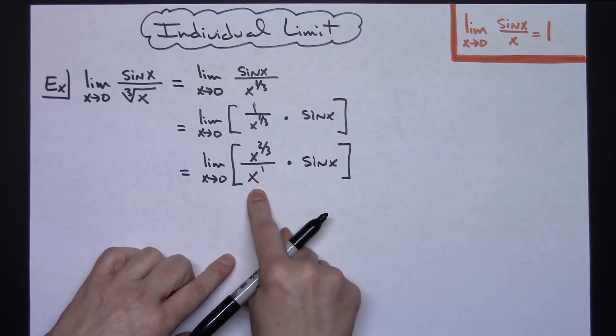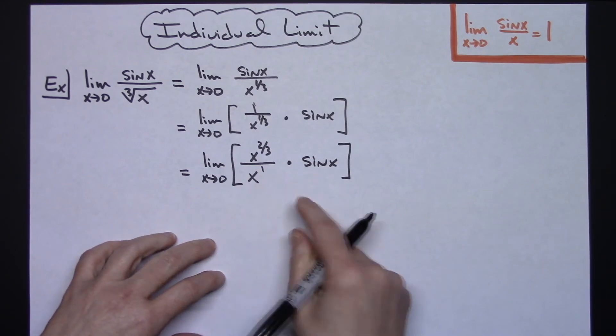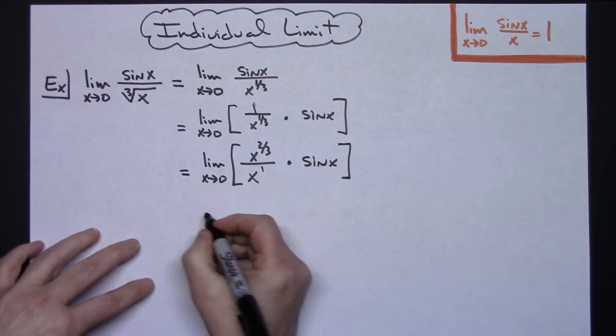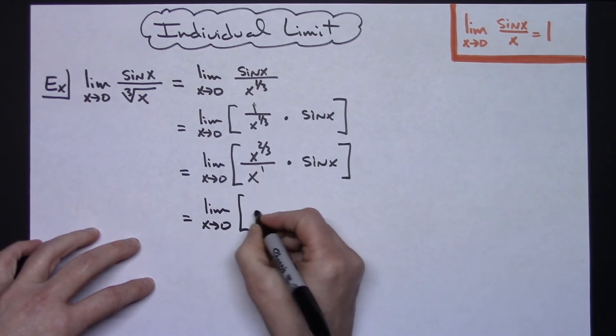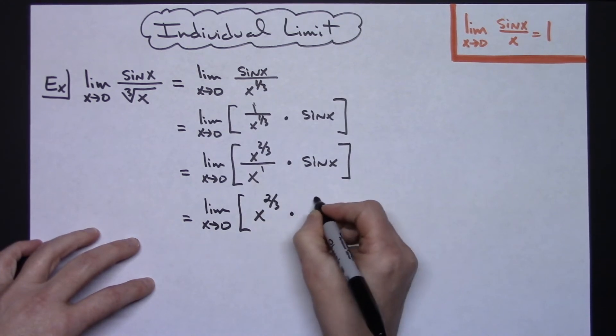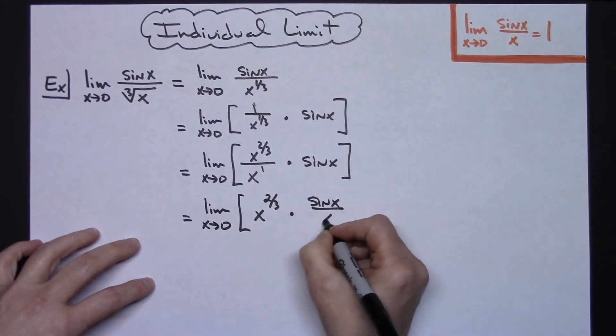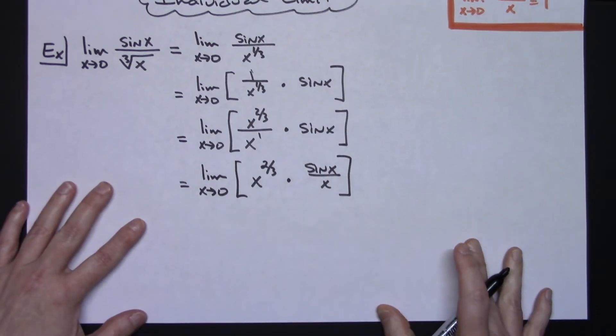I don't need the x on the bottom here; I need it over there. When multiplying, I can multiply in any order. So I can move that: the limit as x approaches zero of x to the two-thirds times sine x over x.